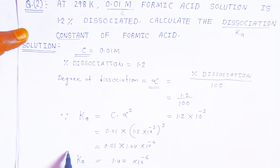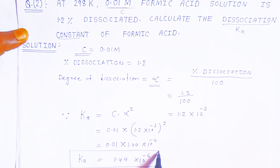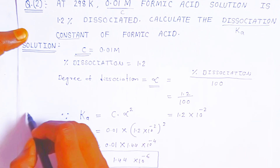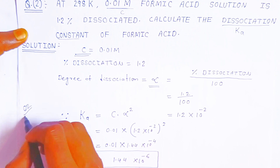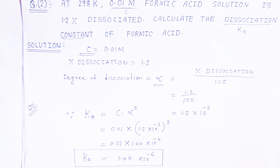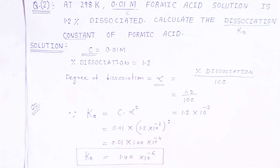This is how we calculate the dissociation constant of formic acid. This is very important for two-mark questions in board examinations. If you like this video, please share it and subscribe. Thank you very much, have a nice day, God bless you.